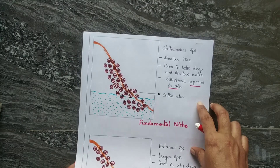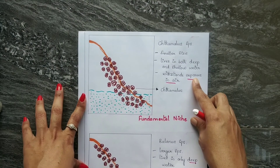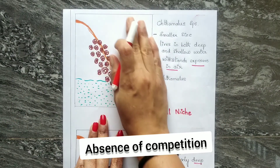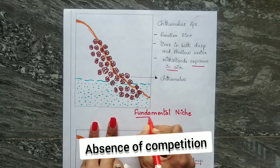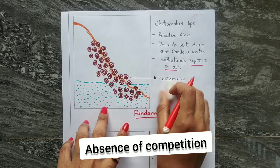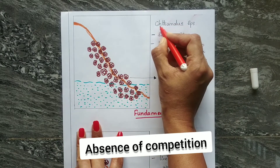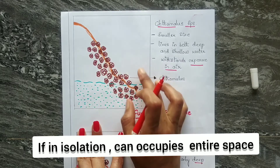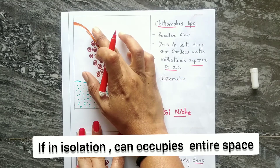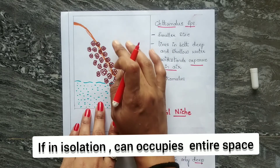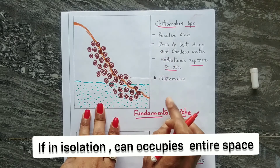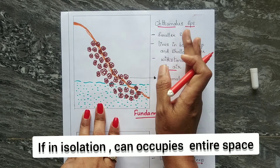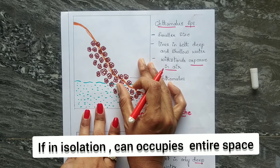Now I will explain the fundamental niche using a diagram. In the absence of competition — meaning only Chthamalus is present — it can live in both shallow and deep water, occupying both the upper zone and the lower zone. It can withstand any kind of physical stress and can occupy any place. This represents the fundamental niche.